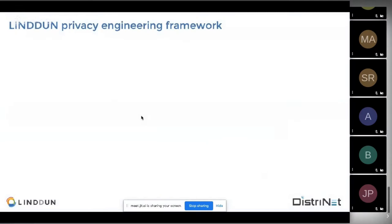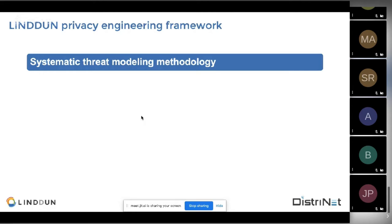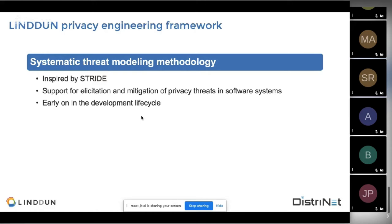Let me first introduce the LINDDUN Privacy Threat Modeling Framework. It is a method that provides systematic support to elicit and mitigate privacy threats in a software system. You want to do that early on in the development lifecycle — once you have a sketch of your system, you can threat model. The method is inspired by STRIDE, a security threat modeling approach created about 20 years ago by Microsoft. It's quite well-known and widespread. LINDDUN has the same structure and the same method.